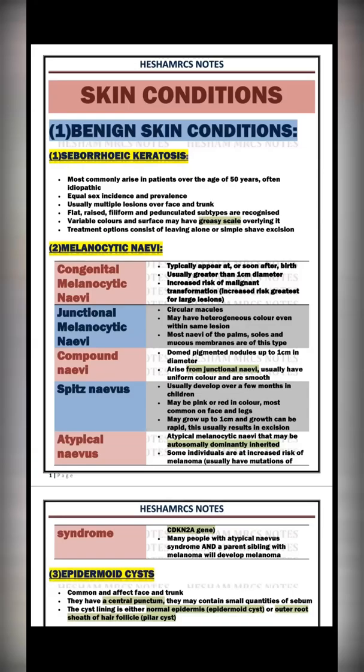To summarize orientation so far: for seborrheic keratosis, the keyword is greasy scale. We also covered melanocytic nevi with four types. Note that junctional nevus is commonly seen in the palm and sole. The compound nevus is a subtype arising from junctional nevus. Keep in mind that junctional nevus in the palm and sole is a common exam point.